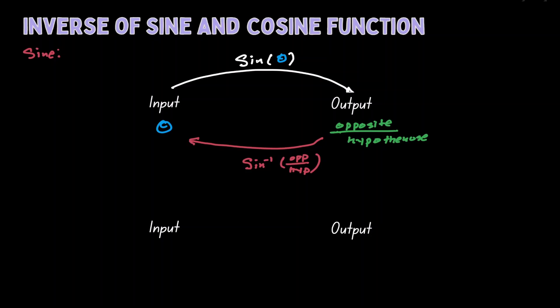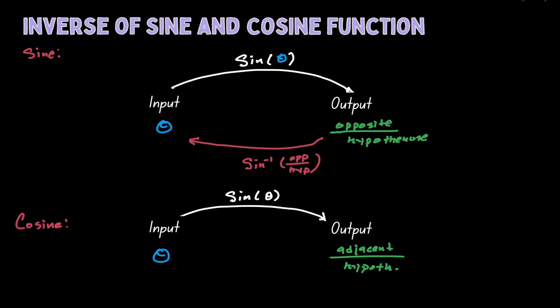Now let's concentrate on the cosine function. As an input we have an angle, and when we plug that angle into the cosine function the output is the ratio of adjacent over hypotenuse. The inverse is a function where we plug in the ratio of adjacent over hypotenuse, and to indicate this is the inverse function we put a little negative one on top of cosine.